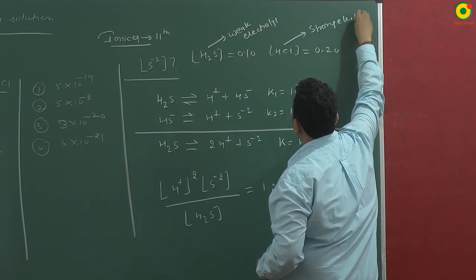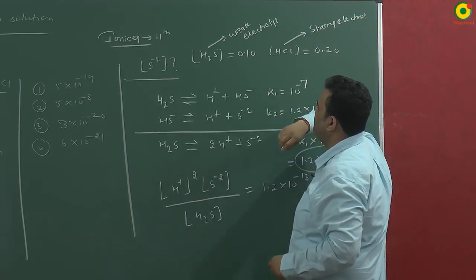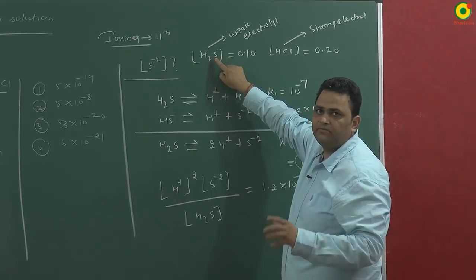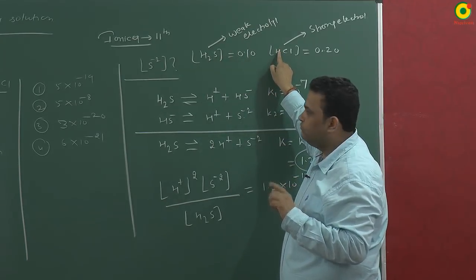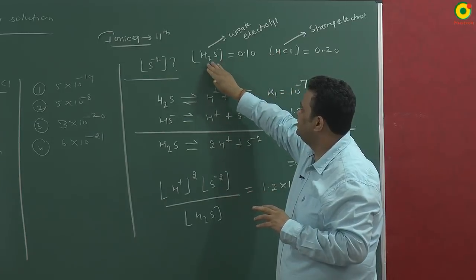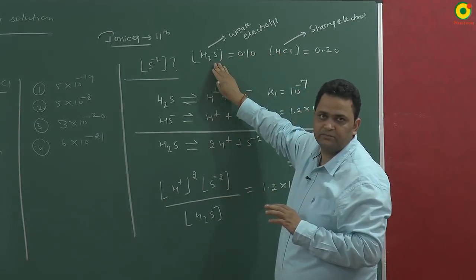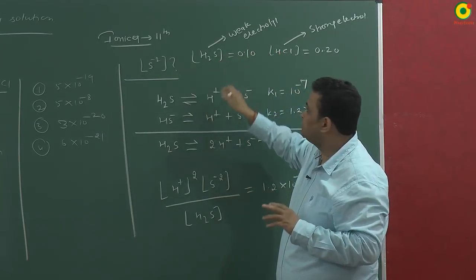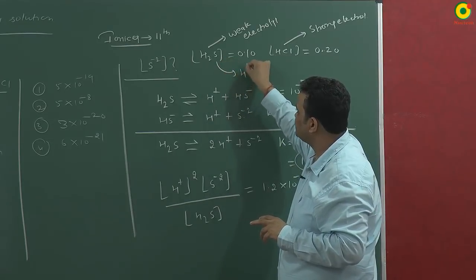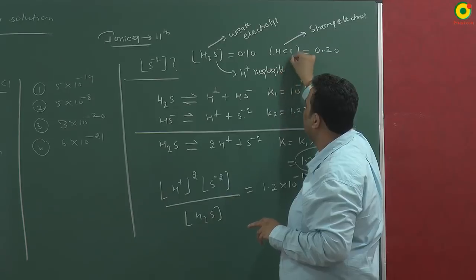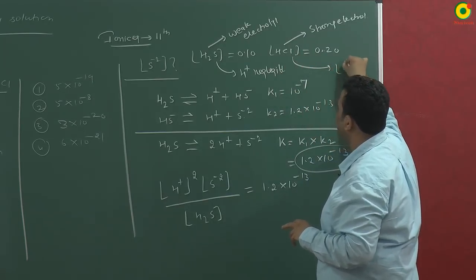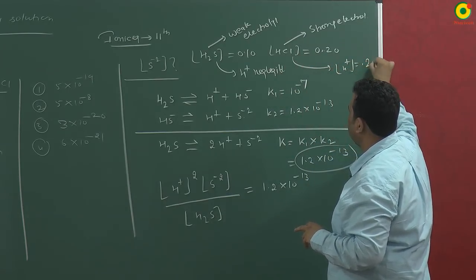Common ion effect will take place and its dissociation will be further decreased because of the HCl. What we can say is that these two electrolytes will produce H plus ions but the H plus ion obtained from H2S is negligible due to common ion effect. HCl gives H plus with 100 percent dissociation which is 0.2.